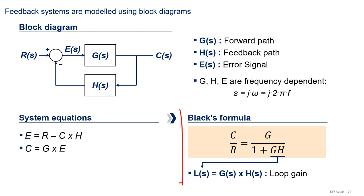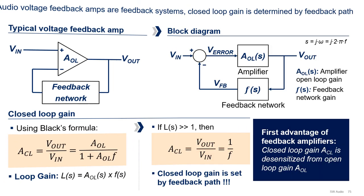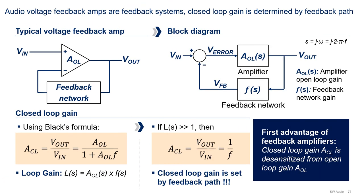Solving the system's equations lead us to Black's formula, which is the forward path over 1 plus the product of the forward path and the feedback path. The product of the forward path and the feedback path is referred as the loop gain. In other words, the combined gain of all the blocks around the feedback loop. As we shall see later on, loop gain is very important to assess stability and much of the dynamics of the feedback loop.